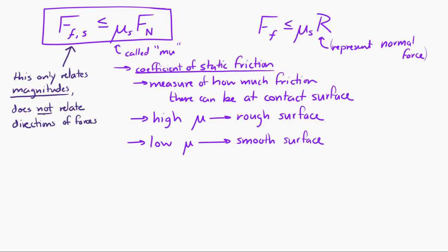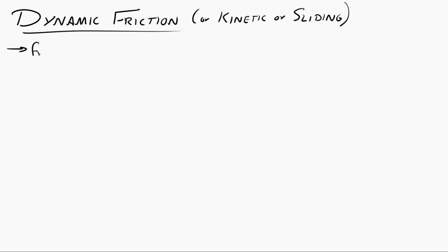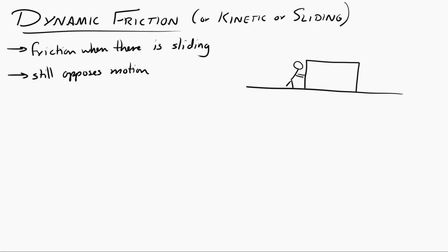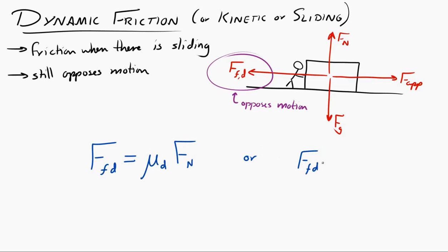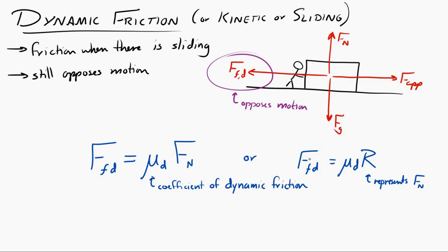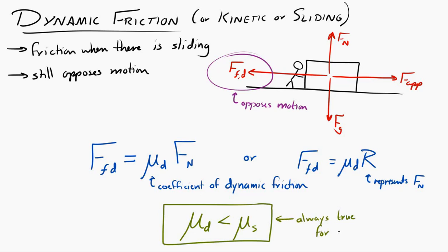If there is sliding motion, it's called dynamic friction, kinetic friction, or sliding friction. It still opposes motion — so for a box sliding to the right, the friction force acts to the left. For dynamic friction, we write an equation (not just an inequality): Ff = μd × N, where μd is the coefficient of dynamic friction. It has no units, and importantly, the coefficient of dynamic friction is always less than the coefficient of static friction.